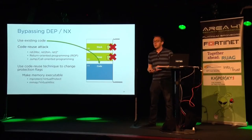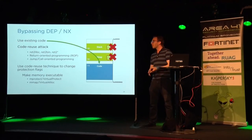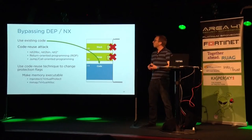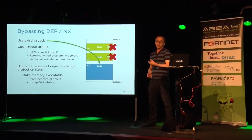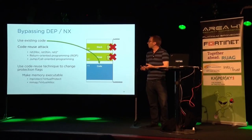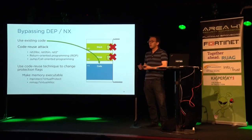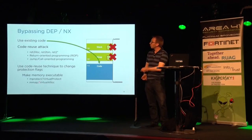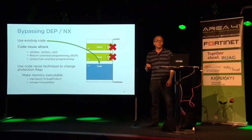Instead of placing code on the stack, attackers do so-called code reuse attacks. There are various techniques: return-to-libc attacks, or the more generic form, return-oriented programming. A similar form that doesn't rely on return instructions is jump- or call-oriented programming. The basic idea is to use existing code until you can make a call to some functions — like memory functions which change protection flags — typically doing ROP until you find a call to VirtualProtect, and then mark any piece of memory executable.